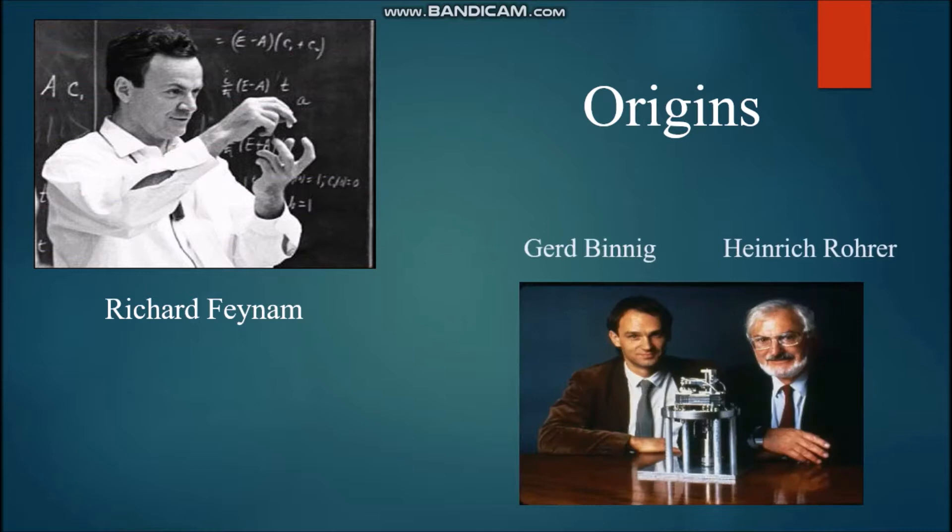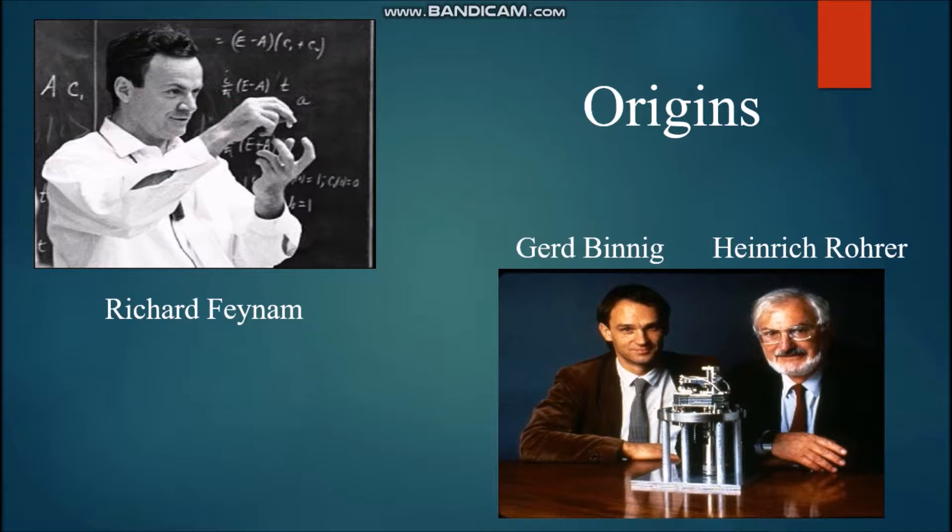The two other people are named Gerd Binnig and Heinrich Rohrer. In 1981, they invented the scanning tunneling microscope, which allowed you to see individual atoms for the first time and helped spark the research of nanotechnology.